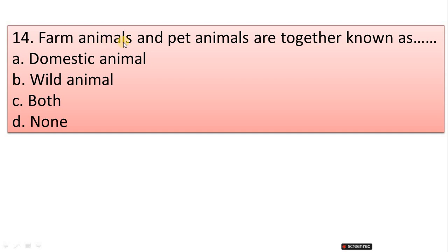Question 14: Farm animals and pet animals are together known as A. Domestic animals, B. Wild animals, C. Both, D. None. Correct answer is option A, Domestic animals.